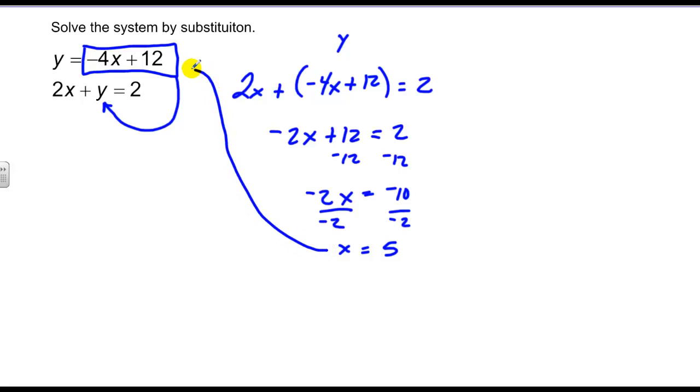Once I know that, I can plug back into one of the equations. So y is equal to negative 4 times 5 plus 12, which gives me a total of negative 8 for y. So 5 and negative 8 is my solution of the system.